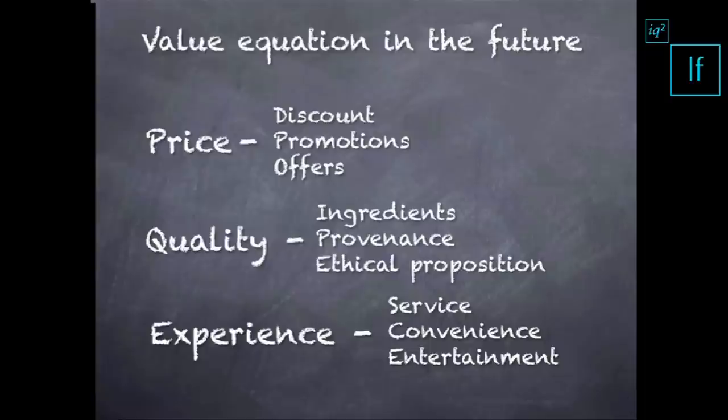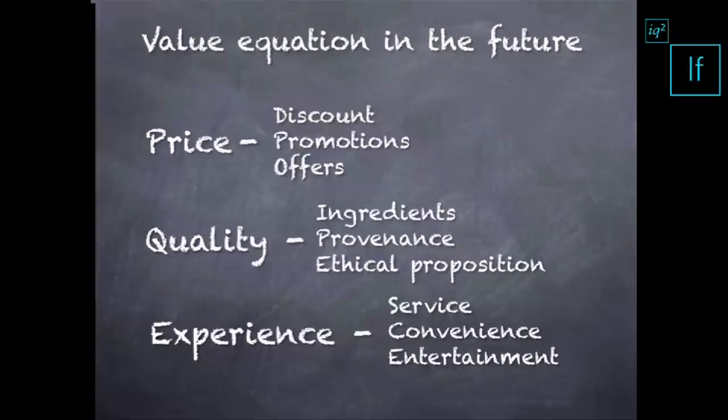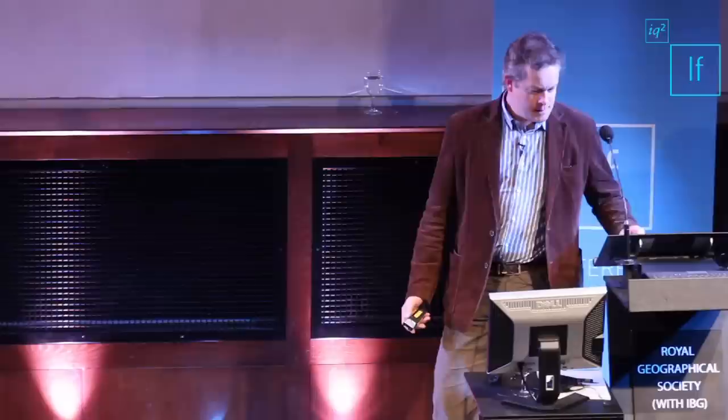And price, of course, will always be about discounts and promotions and loyalty and offers and that sort of thing. Quality will more and more become about the ingredients and provenance, where the stuff came from. It's ethical proposition in terms of how it got there in the first place. I mean, there are food brand owners, the likes of which Kraft and Unilever, who are saying that health might be the new price in future. People will make purchasing decisions based on what is ethically or healthily a better choice. And we're seeing some of that anyway with, you know, salt levels and health levels and what have you. And then, of course, the experience. And the experience will come in the form of better service. It will come in the form of greater convenience. And it will come in the form of entertainment, retail entertainment.